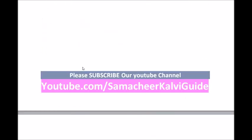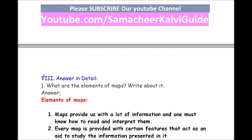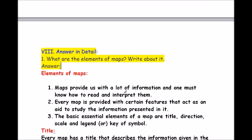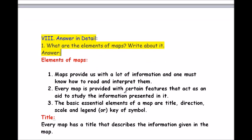Roman number 8, answer in detail. Question 1: what are the elements of a map? Elements of maps: maps provide us with a lot of information and one must know how to read and interpret them. Every map is provided with certain features that act as an aid to study the information presented in it. The basic essential elements of a map are title, direction, scale, and legend or key of symbols.